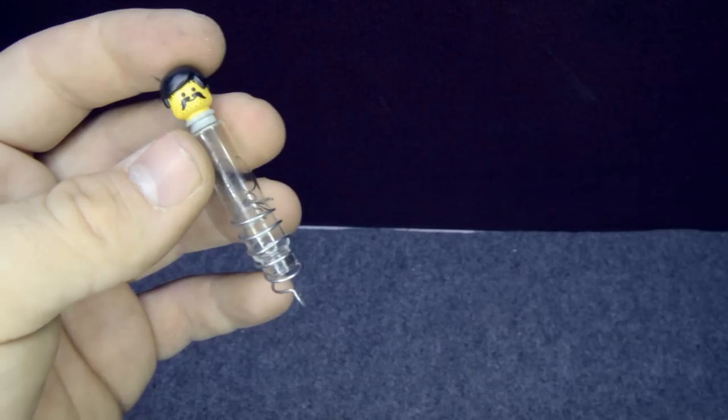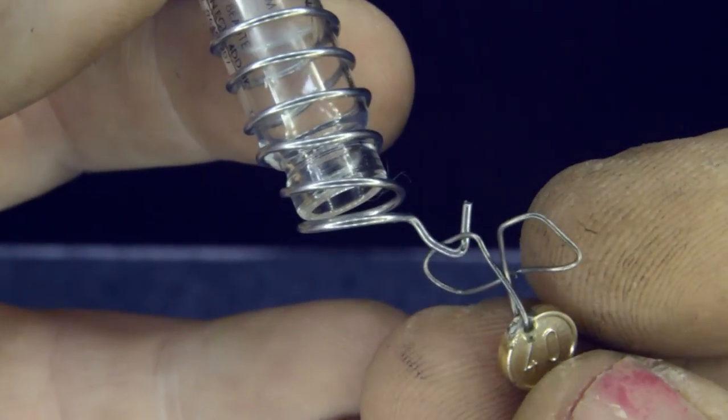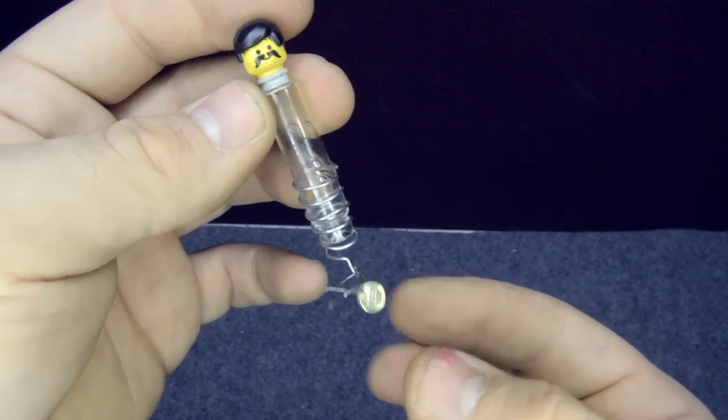So I made this modification to all 4 coins and as you can see the coins and the hook go together and it's much easier to catch them from the bottom.